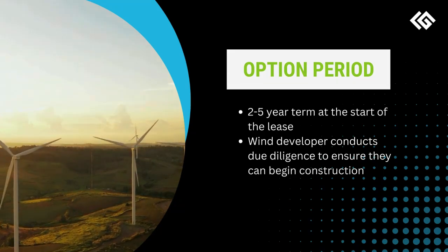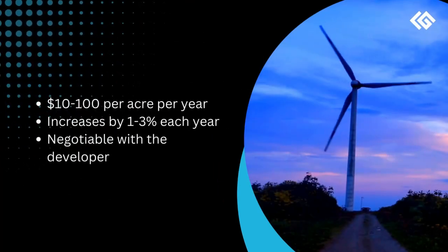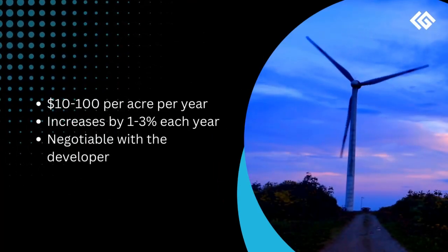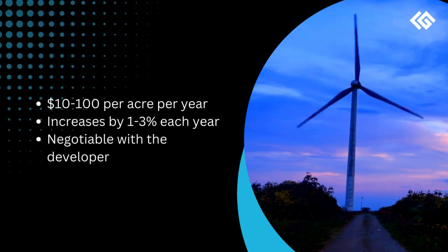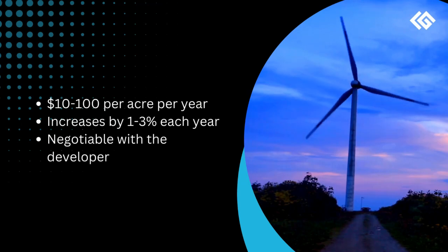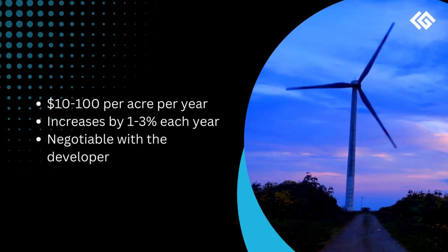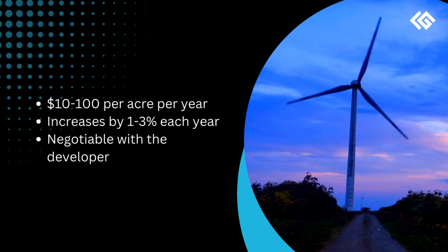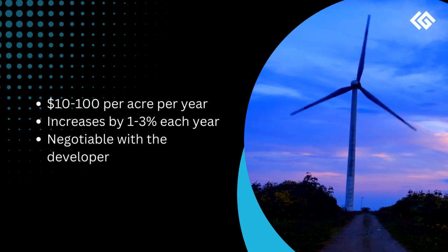During the option period, the landowner is paid a small amount, typically $10 to $100 per acre per year, to not explore other lease options with different wind developers. Option period lease payments generally increase from 1% to 3% each year or in alignment with the current inflation rate at the time. This percentage is negotiable with the wind energy developer.